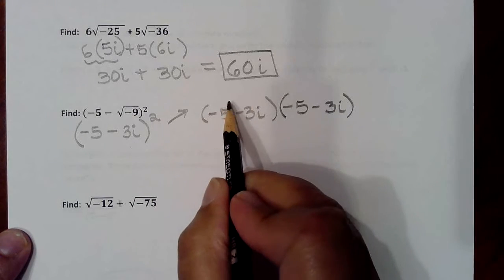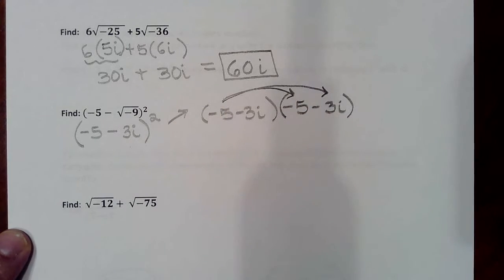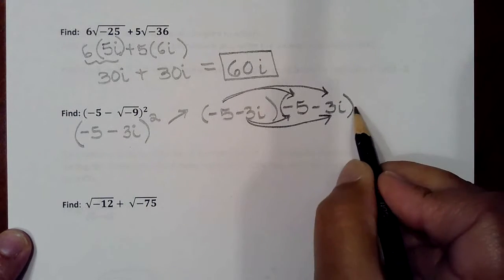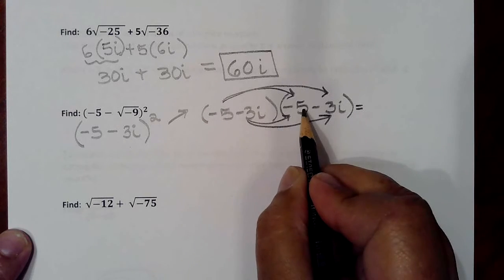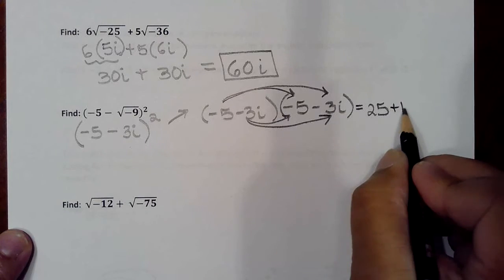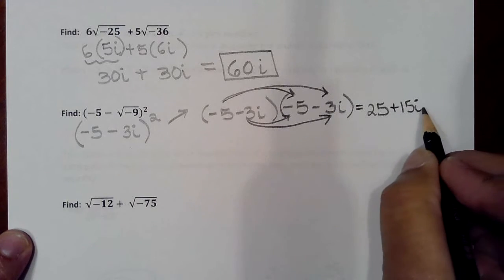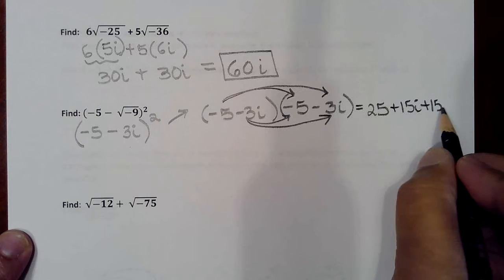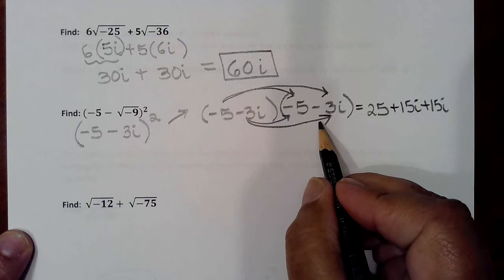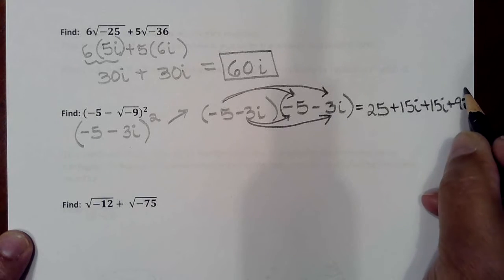Using the FOILing method: first times first, outer times outer, inner times inner, last times last. That results in negative 5 times negative 5 equals 25, negative 5 times negative 3i equals positive 15i, inner times inner gives another 15i, and the last product comes from negative 3i times negative 3i, which gives 9i squared.